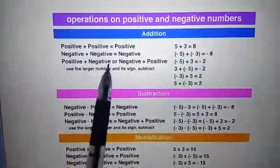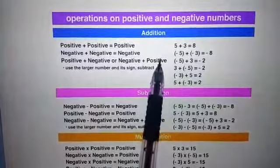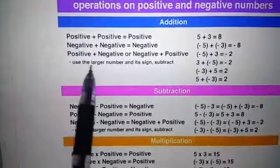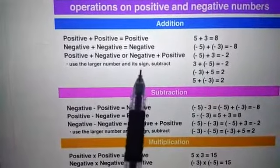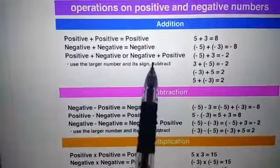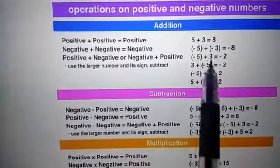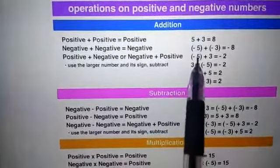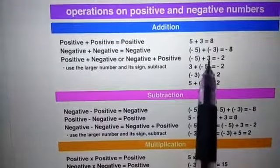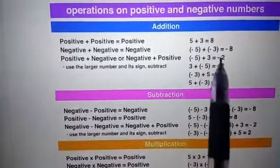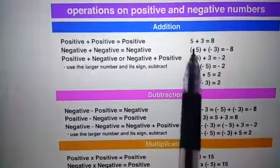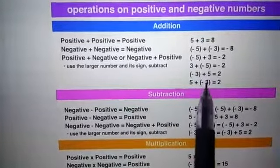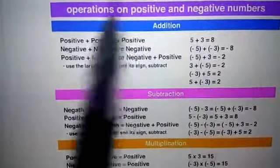If we add a positive and a negative integer, or a negative and a positive integer, the result is calculated as follows: we use the larger number and its sign, and then we subtract. So which is the larger number here? Minus 5 is the larger number. We subtract 3 from 5 to get 2, and we use the sign of the larger number, which is minus, so the result is minus 2.